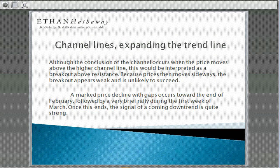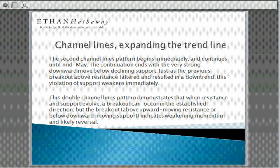Even though channel lines conclude when price moves above a high channel line or below it, when it moves above it can be interpreted as a breakout above resistance. But because the price then moves sideways, the breakout appears weak and unlikely to succeed, which often leads to reversal going the other way. A marked price decline with gaps occurring toward end of February led to a rally in the first week of March; once that ended, the signal of a coming downtrend was very strong. The second channel line downtrend appeared immediately and went on until mid-May, ending with very strong downward movement below declining support marked by long black candles. This double channel line pattern shows that a breakout above upward-moving resistance or below downward-moving support indicates weakening momentum and likely reversal.